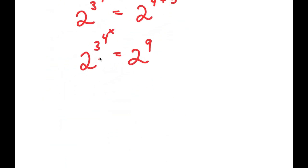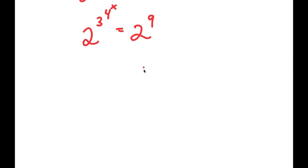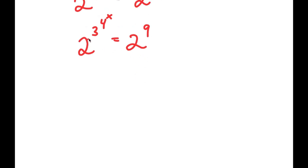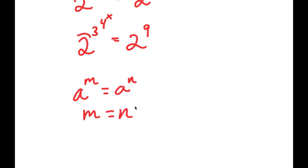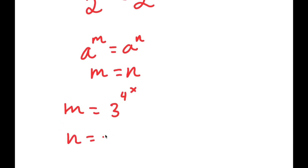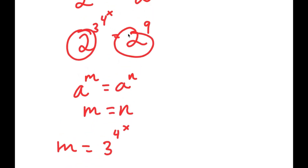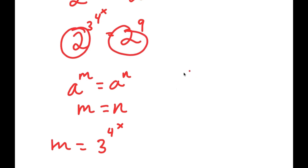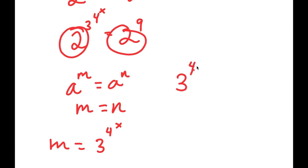Going back, we have 2 to the power of 3 to the power of 4 to the power of x is equal to 2 to the power of 9. If I have something in the form a to the power of m is equal to a to the power of n, this means that m is equal to n. So in this case, m is equal to 3 to the power of 4 to the power of x and n is equal to 9. Because these two bases are the same, this means that 3 to the power of 4 to the power of x is equal to 9.